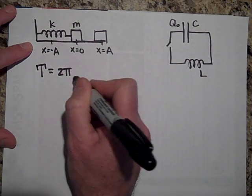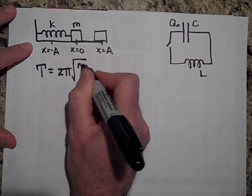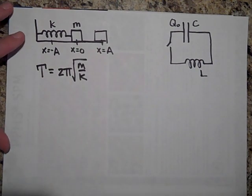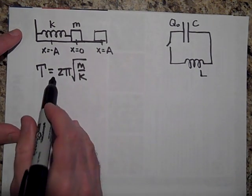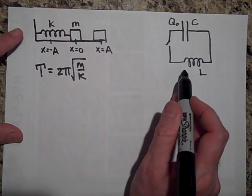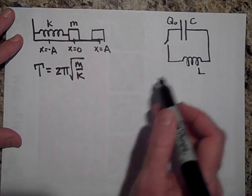Well, same thing with this. But the period of this is equal to 2π times the square root of m over k. Well, I'd like you to see that for every formula here, we're going to get a formula here.